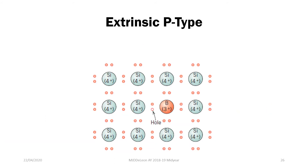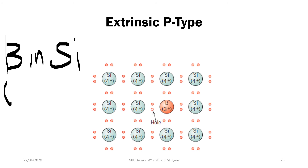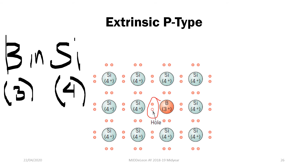In extrinsic P-type semiconductors, we add elements that have fewer electrons than silicon. For example, boron has 3 valence electrons compared to silicon's 4. When boron is added to silicon, there is one electron missing, which gives rise to the creation of a hole. Upon exposure to an applied electric field, the hole moves, creating a movement of positively charged particles — conduction then happens.